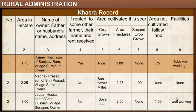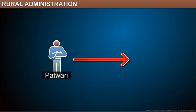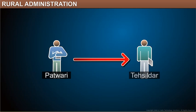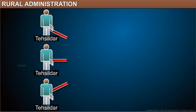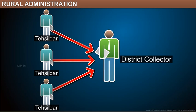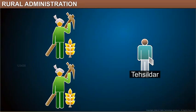The land record work is monitored by the Revenue Department of the Government of India. The Patwari reports to the Revenue Officer at the district level, who is also known as the Tehsildar. Tehsildars from various districts report to the district collector. The Tehsildars supervise the work of the Patwaris and ensure that the land records are properly maintained and revenue is collected. The Tehsildar also provides a copy of the land records to farmers.